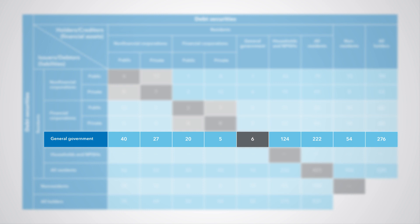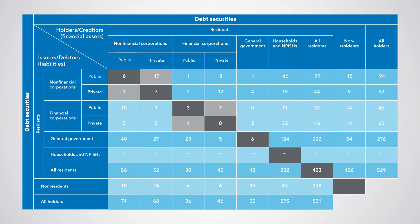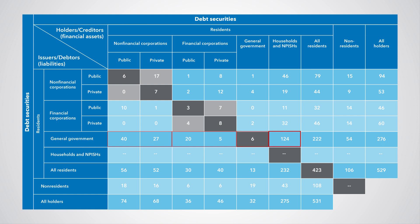Debt securities issued by general government are shown in the fifth row. We can see that government has liabilities in the form of debt securities to non-financial corporations of 67 (that is 40 plus 27), to financial corporations of 25 (that is 20 plus 5), to other general government units of 6, to households and non-profit institutions serving households of 124, and to the rest of the world of 54.